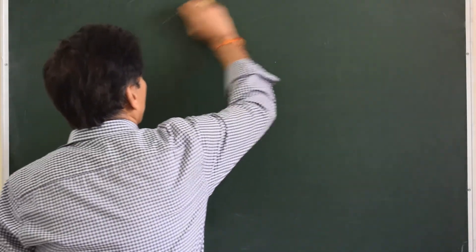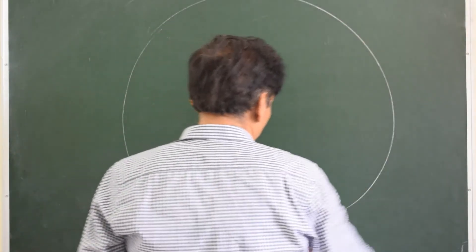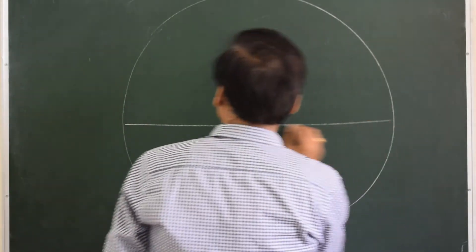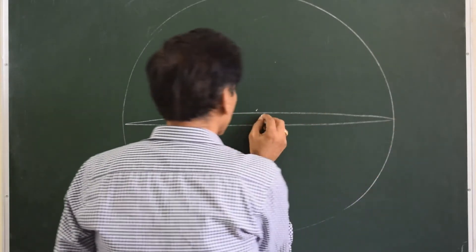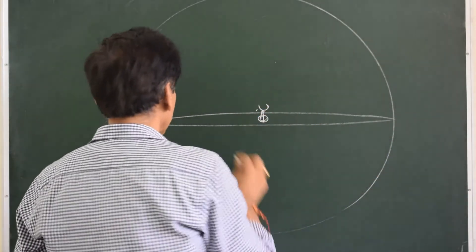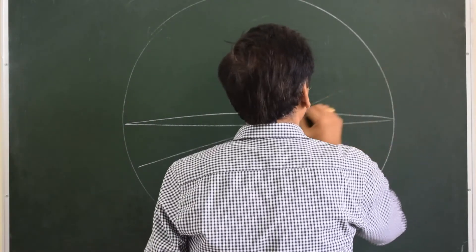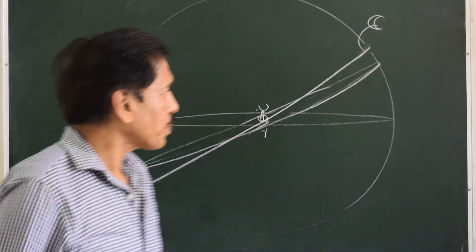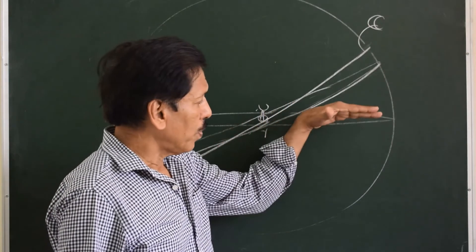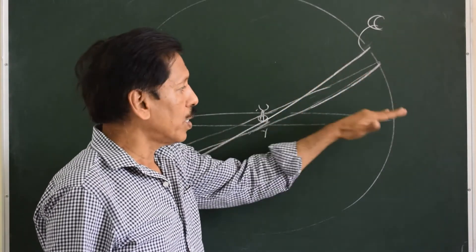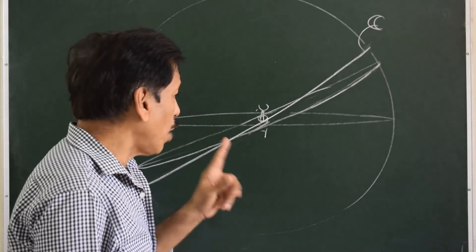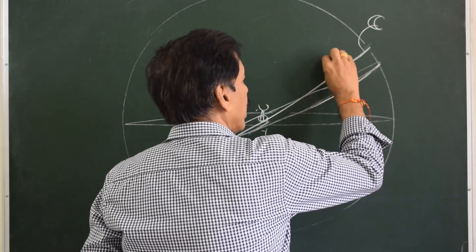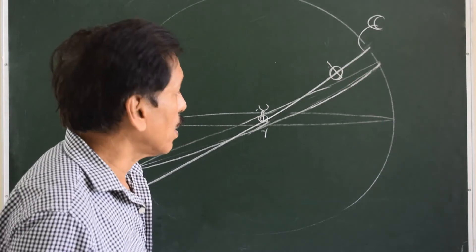Now to understand libration in latitude, let's go back to the diagram of the celestial sphere. As you know, in the celestial sphere the Earth is at the center. Here is the equinoctial, here is the Earth with its axis of rotation, here is the ecliptic, and here is the Moon's orbit of revolution. The equinoctial and ecliptic are inclined at 23.5 degrees, and the Moon's orbit is inclined at 5 and a quarter degrees to the ecliptic.